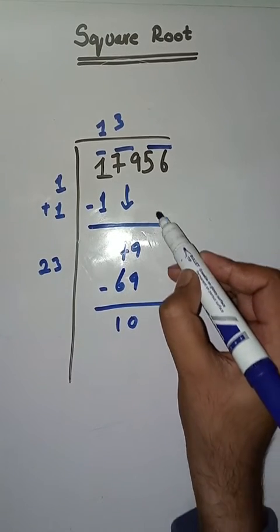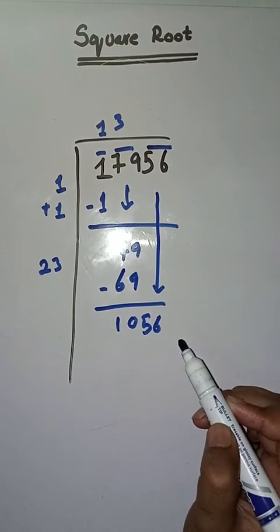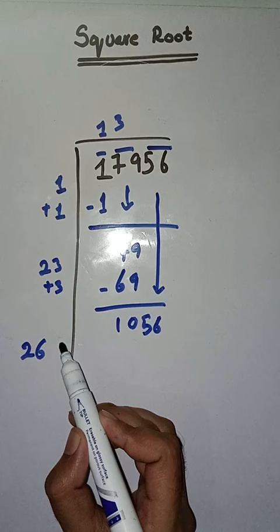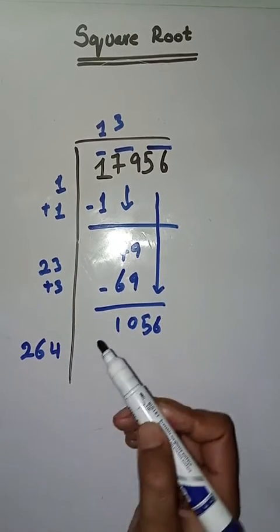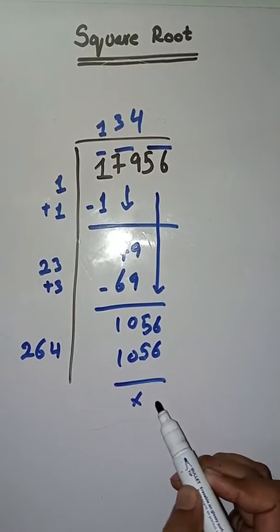Next pair is 56, we bring it down. Now we do 23 plus 3, which is equal to 26. Now we will take a number four. 264 times 4 is 1056. So this is completely solved.